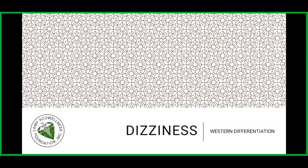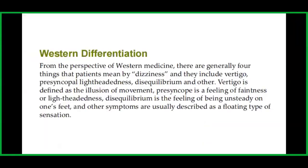Let's talk about dizziness — western differentiation. From the perspective of western medicine, there are generally four things that patients mean by dizziness: vertigo, presyncopal lightheadedness, disequilibrium, and other. Vertigo is defined as an illusion of movement; presyncope is a feeling of faintness or lightheadedness; disequilibrium is a feeling of being unsteady on one's feet; and other symptoms are usually described as a floating type of sensation.